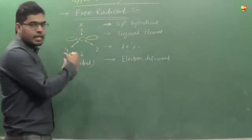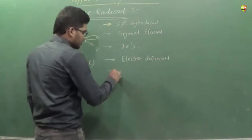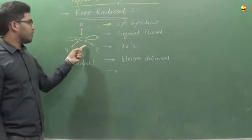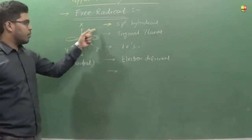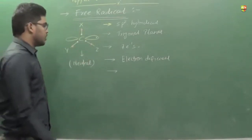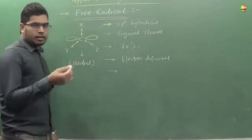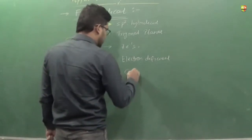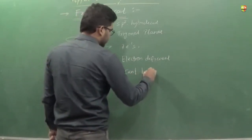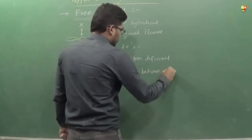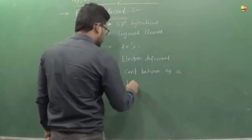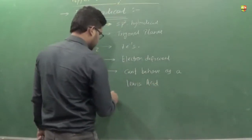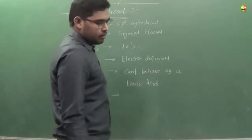But it cannot accept a pair of electrons, because carbon cannot extend its octet. If it accepts a pair of electrons, the total number of electrons becomes nine, which is not possible. So it cannot extend its octet, it cannot accept a pair of electrons, and so it cannot behave as a Lewis acid.